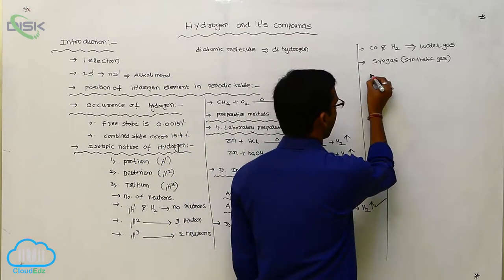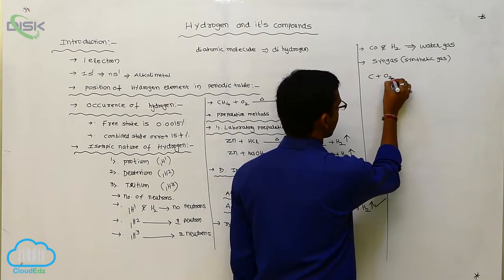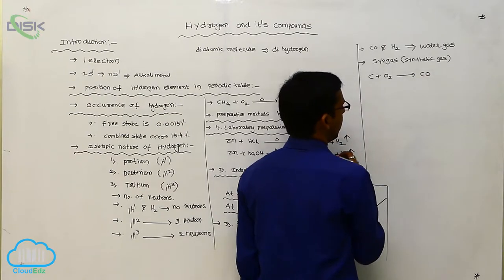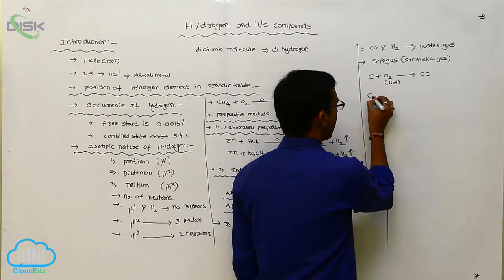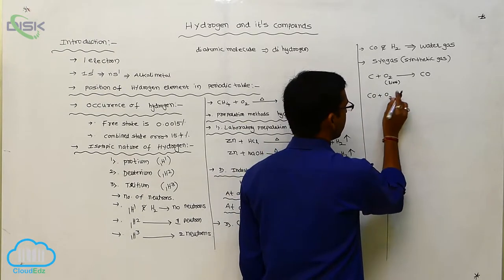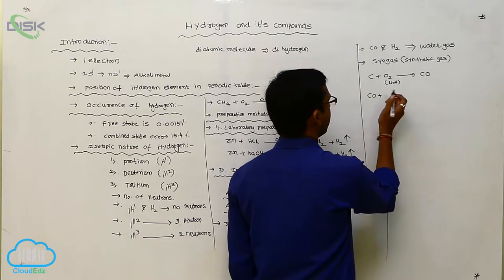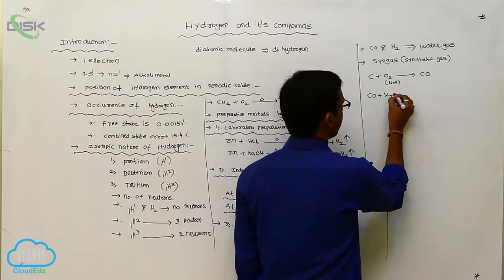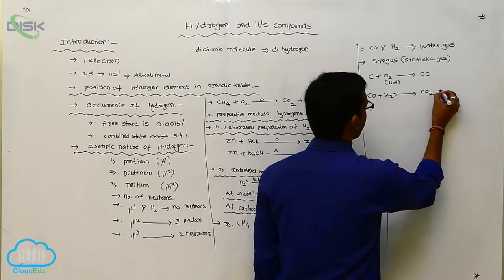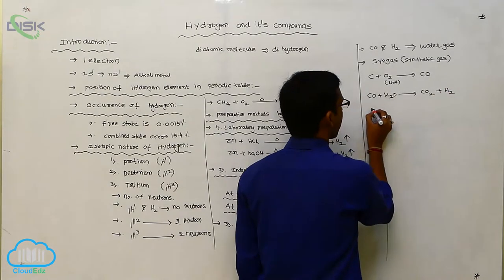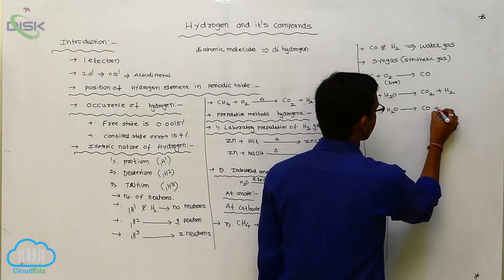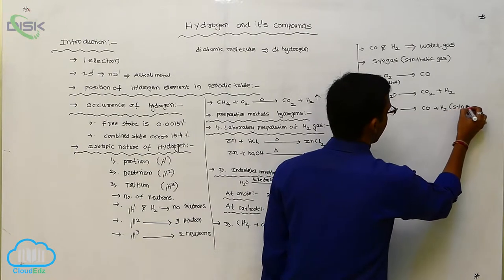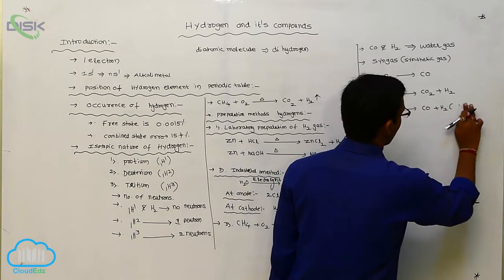Carbon reacts with oxygen in a limited amount of air, forming carbon monoxide. This carbon monoxide is then reacted with water molecule to produce carbon dioxide plus H₂. Carbon reacted with H₂O forms carbon monoxide plus H₂. This is called syngas or water gas.